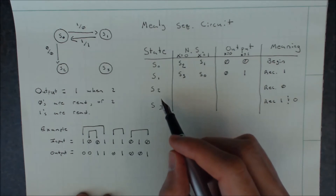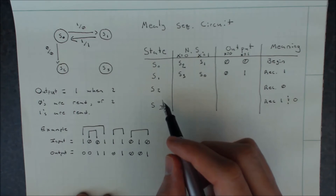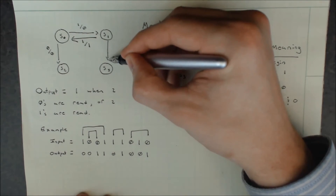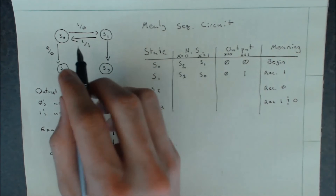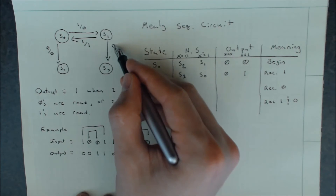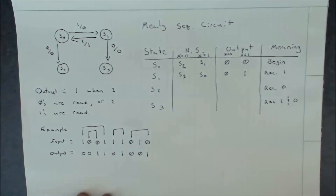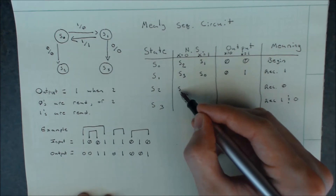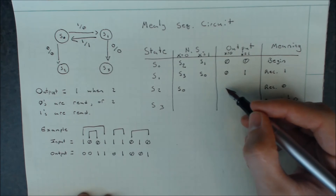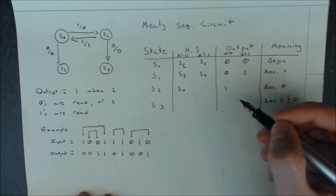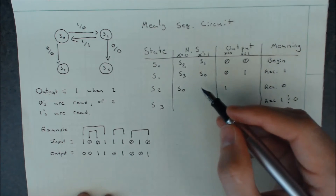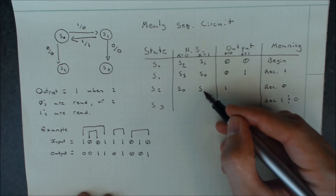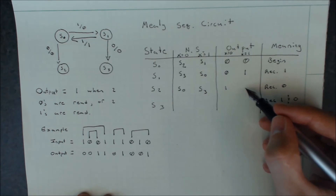For S2, we follow the same kind of pattern. We've received a single zero, so if we receive another zero, we'll again return to S0 and output a one. If instead we received a one, we go to that same S3 state where we've received only a single one and a single zero, and our output is zero.